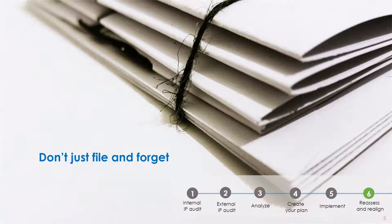Even the most perfectly thought-out strategy can be affected by unforeseen factors, which could be reasons your IP strategy needs to change. Many businesses have an invention, they apply for a patent with an idea on where to file, and then head back to business as usual. This is what some IP strategists refer to as file-and-forget, and can result in an irreversible trajectory for your business.